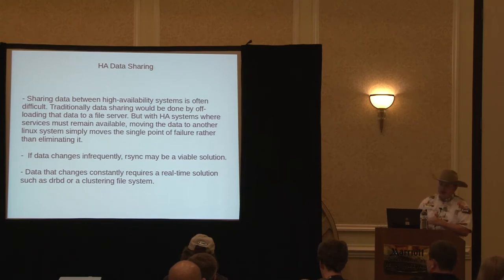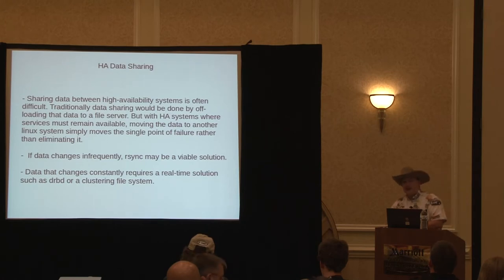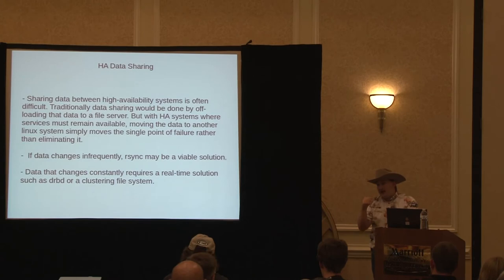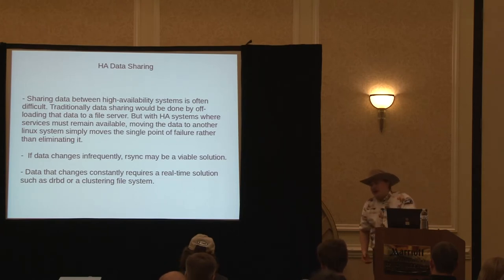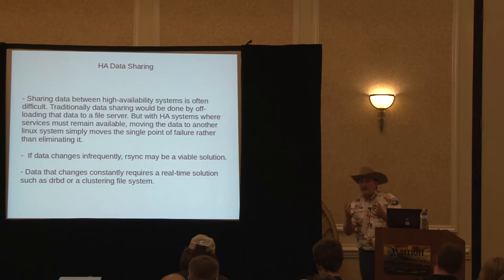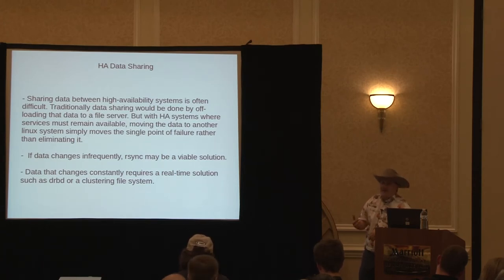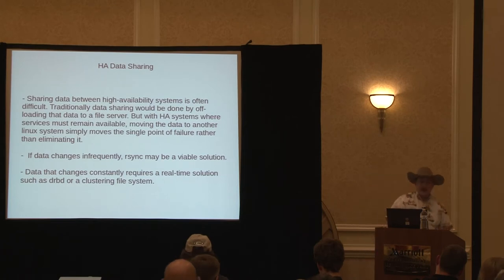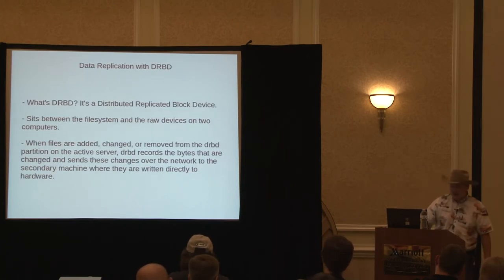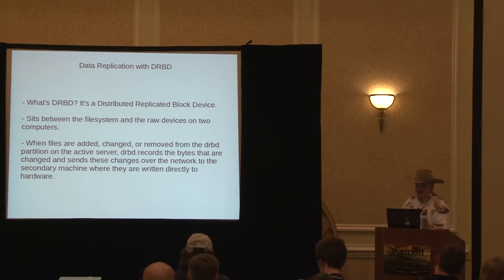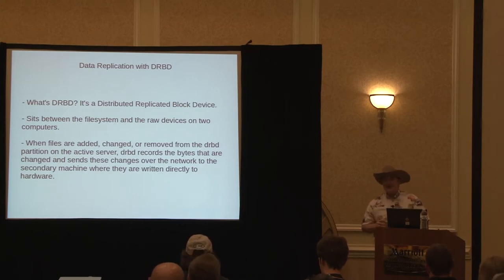But if you need something real-time — say, someone is uploading content to your web servers, making posts on a forum — data sharing between your primary and secondary systems is very important. If you're going to do that, there are really only two ways: DRBD, which I'll cover next, or a clustering file system like GFS2 or OCFS. A clustering file system is probably on a SAN connected via iSCSI to multiple targets, but that SAN is then a single point of failure. SAN failure is not fun.